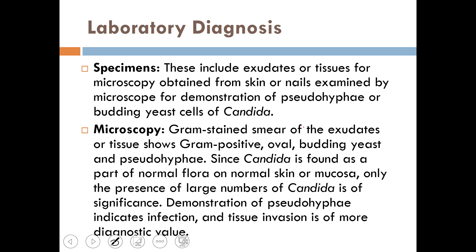For laboratory diagnosis of Candida albicans, specimens are exudates or tissues from skin or nails examined by microscope for pseudohyphae and budding yeast cells. In direct microscopy, a gram stain is performed — gram-positive oval budding yeast and pseudohyphae indicate Candida albicans. Many hospitals prefer direct microscopy because it does not take much time for detection.